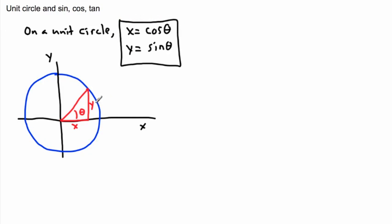Our y value here is sine theta, and our x value here is given by cos theta. Now how do you remember which is which? This is really lame, but I think that y ever so slightly rhymes with sine — at least it has the 'i' sound in it. So sine rhymes with y, that's why y is the one that's the sine.